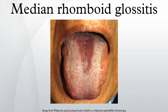Etiopathogenesis – Embryologically, the tongue is formed by two lateral processes, the lingual tubercles, meeting in the midline and fusing above the central structure from the first and second branchial arches, the tuberculum impar. The posterior dorsal point is occasionally defective, leaving a rhomboid-shaped, smooth, erythematous mucosa lacking in papillae.